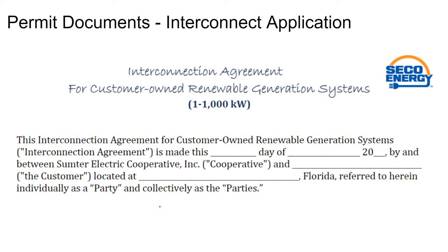Let's take a look at the interconnection application. This is just a sample I pulled off the internet — an interconnection agreement for customers up to one megawatt in size. We can see that from region to region, the size requirements for interconnection applications vary greatly. This is a boilerplate up to one megawatt.